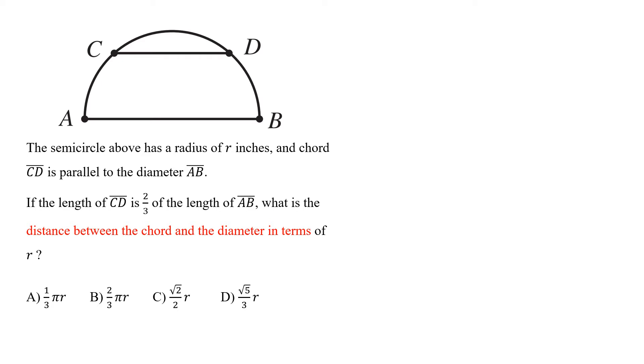The question is, the semicircle above has a radius of r inches. If the radius is r, then this diameter AB will be equal to 2r.